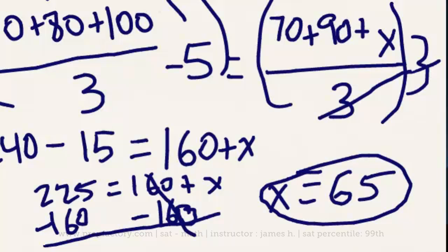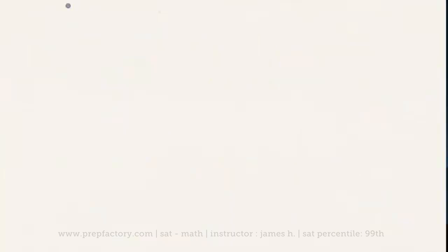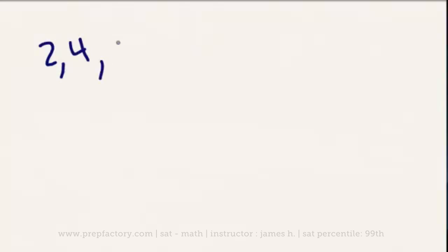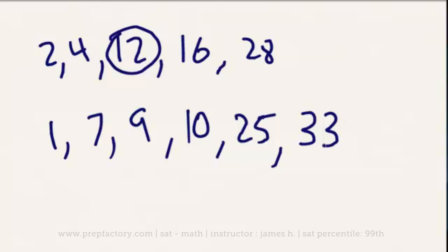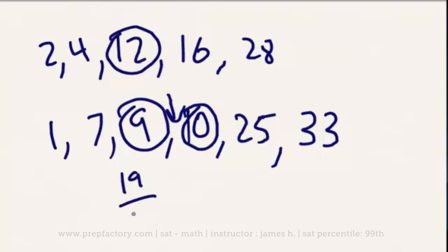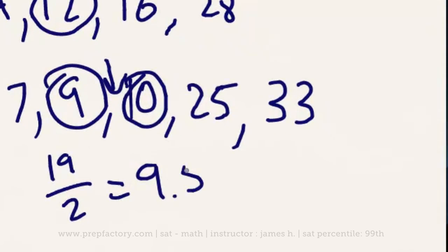Now that we've covered the basics of average problems, let's take a look at some related but much less commonly tested concepts: median and mode. The median is just the number that appears in the middle of a set. For example, in the set 2, 4, 12, 16, and 28, the median is 12. If you have an even number of terms — say 1, 7, 9, 10, 25, and 33 — there's no single middle number, so you average the two middle values: (9 + 10) / 2 = 9.5.